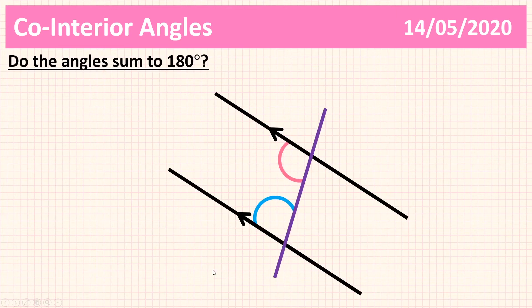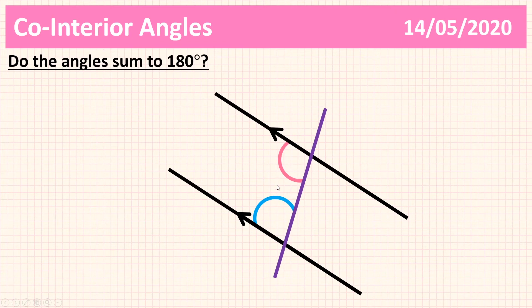So here's our first diagram. Let's have a look at it. Do the angles sum to 180? Pause the video — what do you think? Well, I've got a set of parallel lines, I've got my transversal. The angles are on the same side of the transversal, and they are both interior to the parallel lines. So yes, they do sum to 180 because the angles are co-interior.